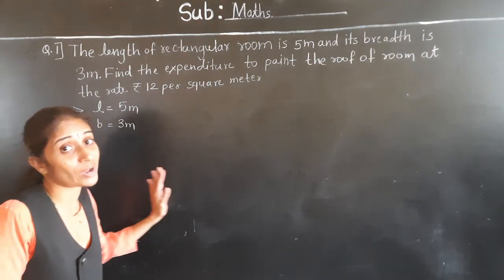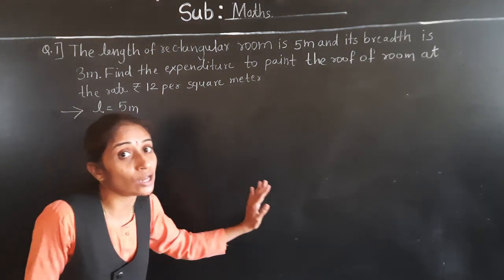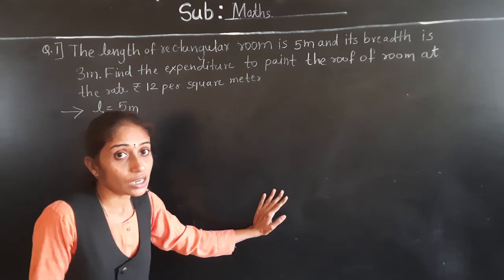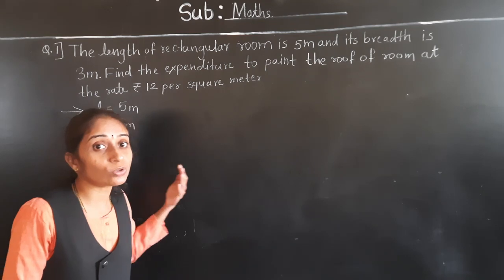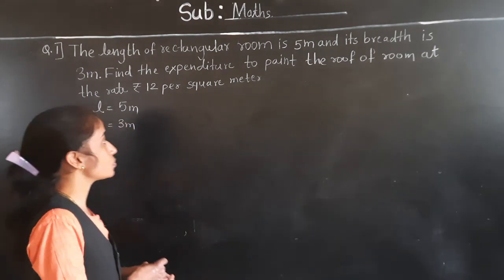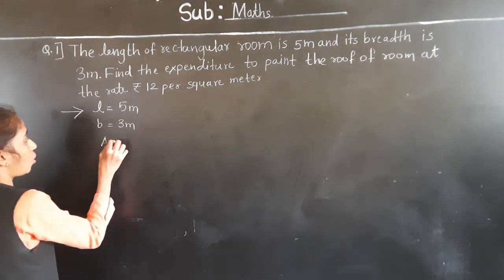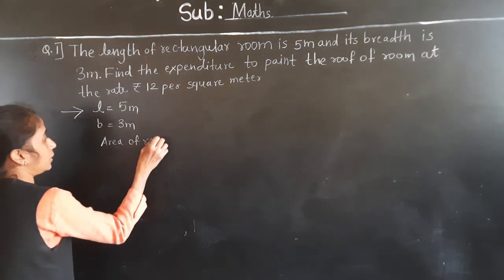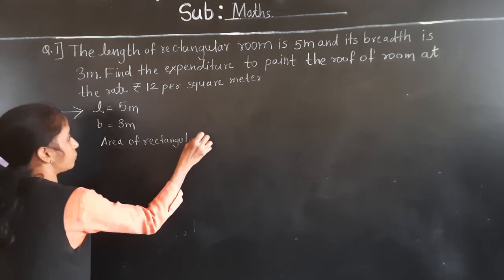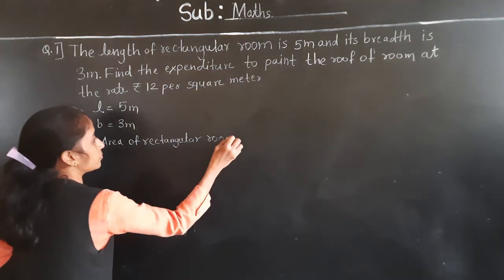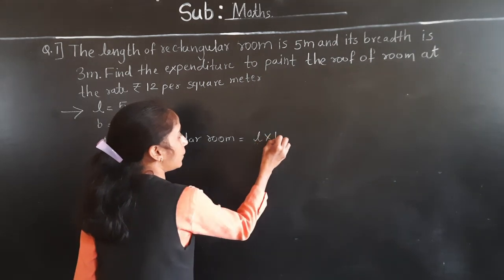So first we should find the area. First, let's find the area of the room — then we can find the expenditure of the roof. Area of rectangular room is equal to length multiplied by breadth.